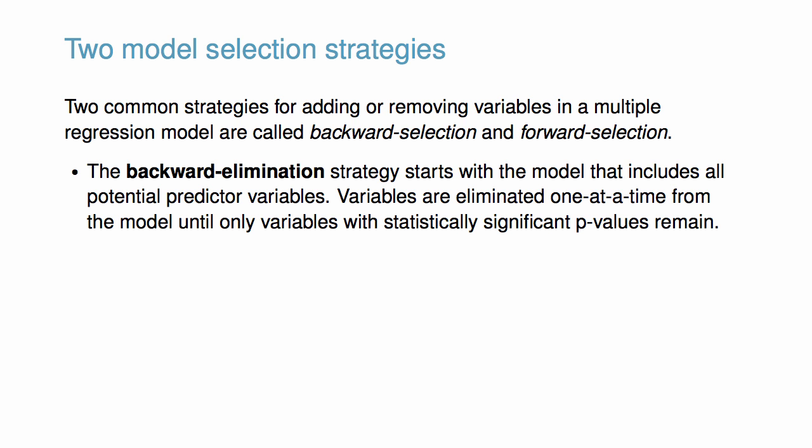The backward elimination strategy starts with the model that includes all potential predictor variables. Variables are then eliminated one at a time from the model until only variables with statistically significant p-values remain. The strategy within each elimination step is to drop the variable with the largest p-value, refit the model, and reassess the inclusion of all remaining variables.